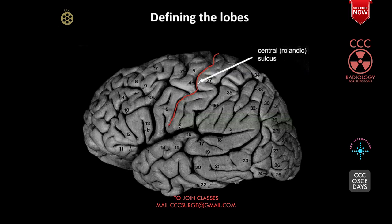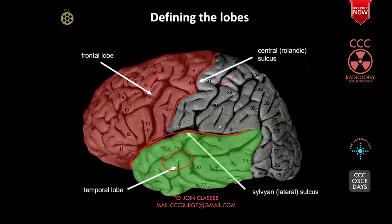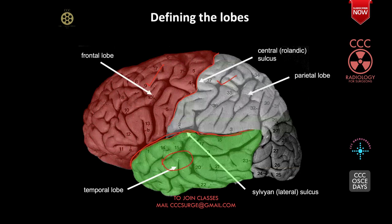This is the central sulcus — it is called an inverted hook-shaped sulcus. Anterior to the central sulcus is called the frontal lobe, and posterior to the central sulcus is called the parietal lobe. This is the sylvian sulcus, which is dividing the temporal lobe from the rest of the cerebral hemisphere. Another sulcus called the parieto-occipital sulcus divides the parietal lobe from the occipital lobe. So in each cerebral hemisphere we have a frontal lobe, parietal, occipital, and temporal lobes.